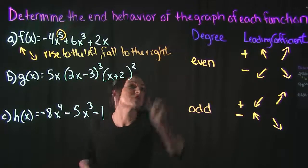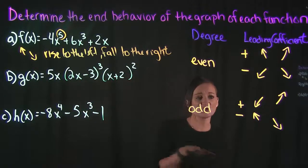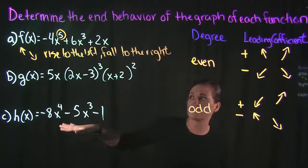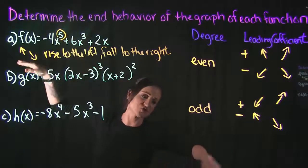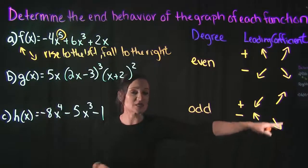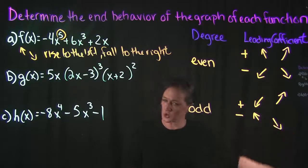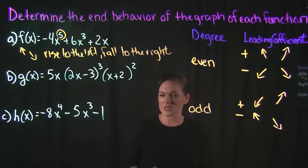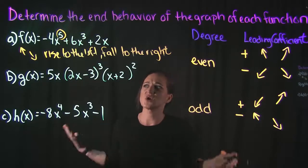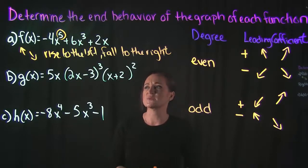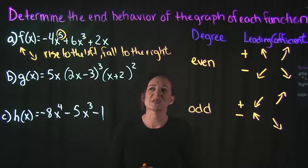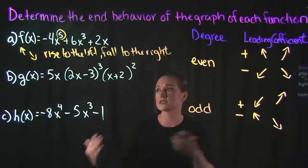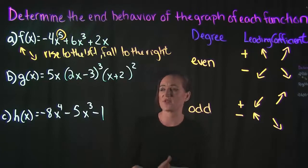Another way to express it is: as x goes to negative infinity, the function is going to be increasing; as x goes to positive infinity, it's going to be decreasing. Just depending on how they want your answer written, be aware of the different ways you can state it — but they all mean the same thing.